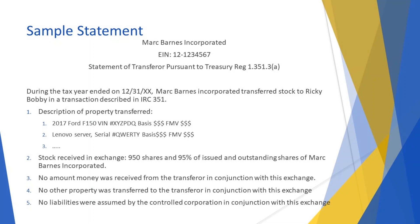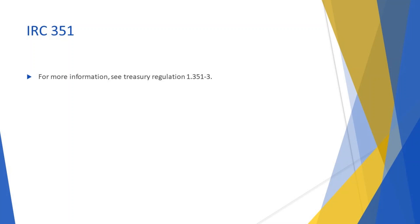Bullet 5 describes any liabilities assumed from Ricky Bobby by the corporation. For more information, see Treasury Regulation 1.351-3.